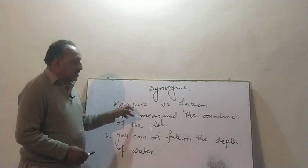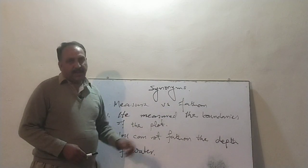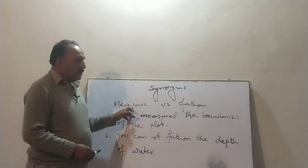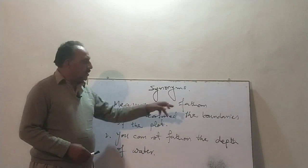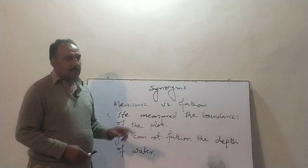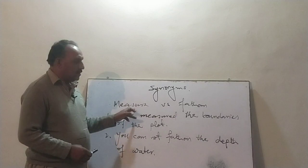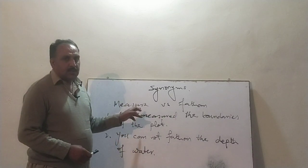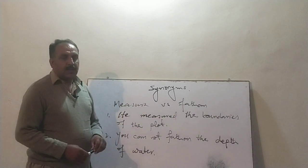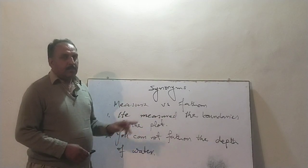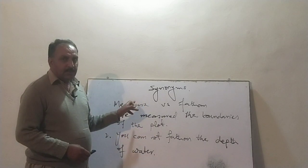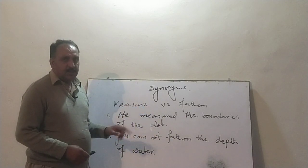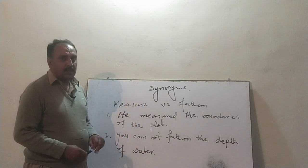That is 'measure' and 'fathom.' We generally use these as nouns, but 'measured' is also a verb. The same is the case with 'fathom' — it is also a verb.